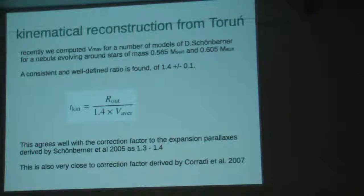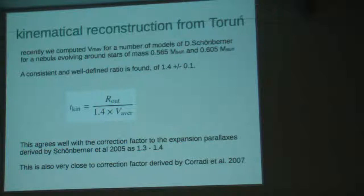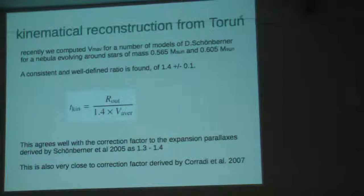Recently — this year — in still unpublished results, we computed this mass-average velocity for a number of models of the Detlef Schönberner group. We have velocity structure, density structure; we can make this integration. We made the comparison of the true expansion velocity derived from the models, and our mass-average velocity was found with a well-defined ratio of about 1.4 over a number of models and different ages. So it seems to me this mass-average velocity is quite a good parameter, tested not only on different observations but on kinematical hydrodynamical models. This value of 1.4 is quite close to the value of 1.3–1.4 derived by Schönberner as a correction factor to expansion parallaxes, and it is also very close to the factor of 1.2–1.3 derived by Corradi et al. in 2007.